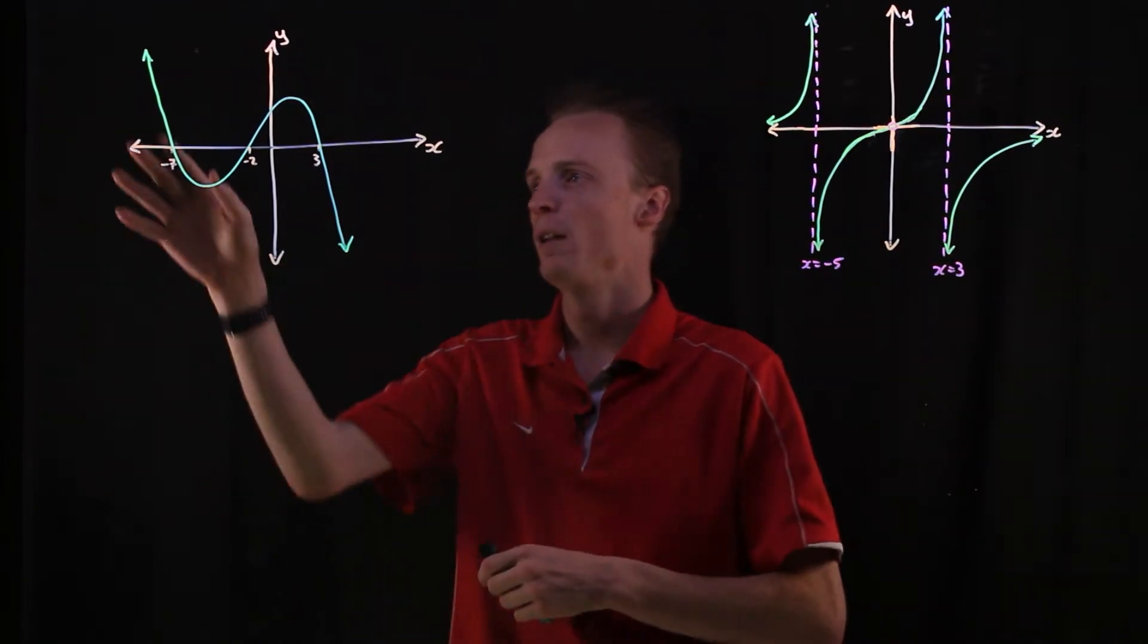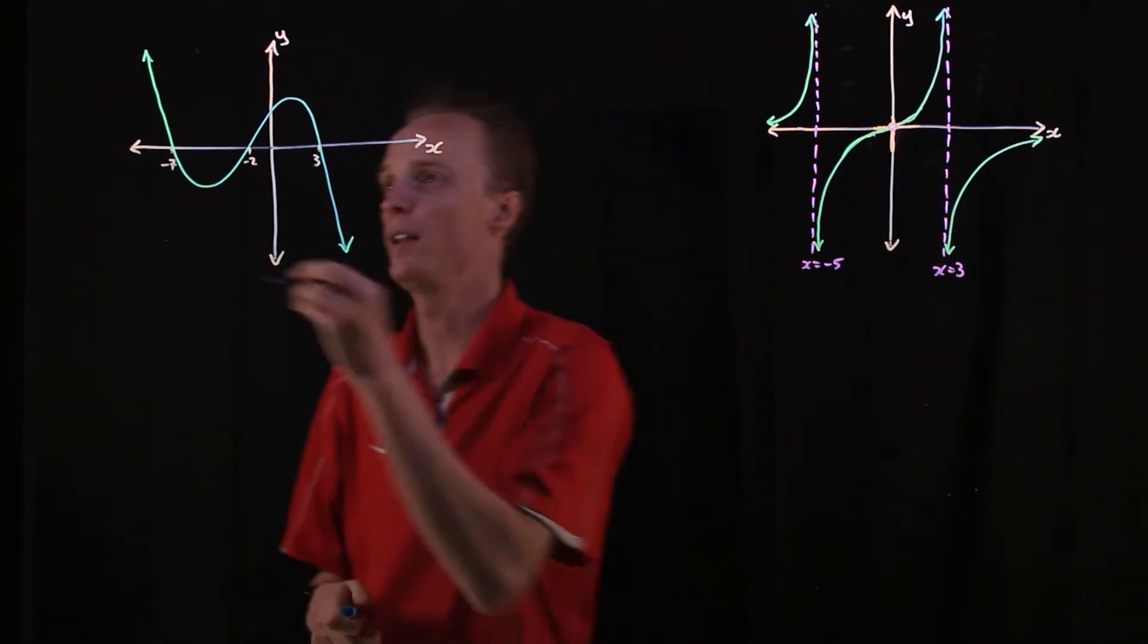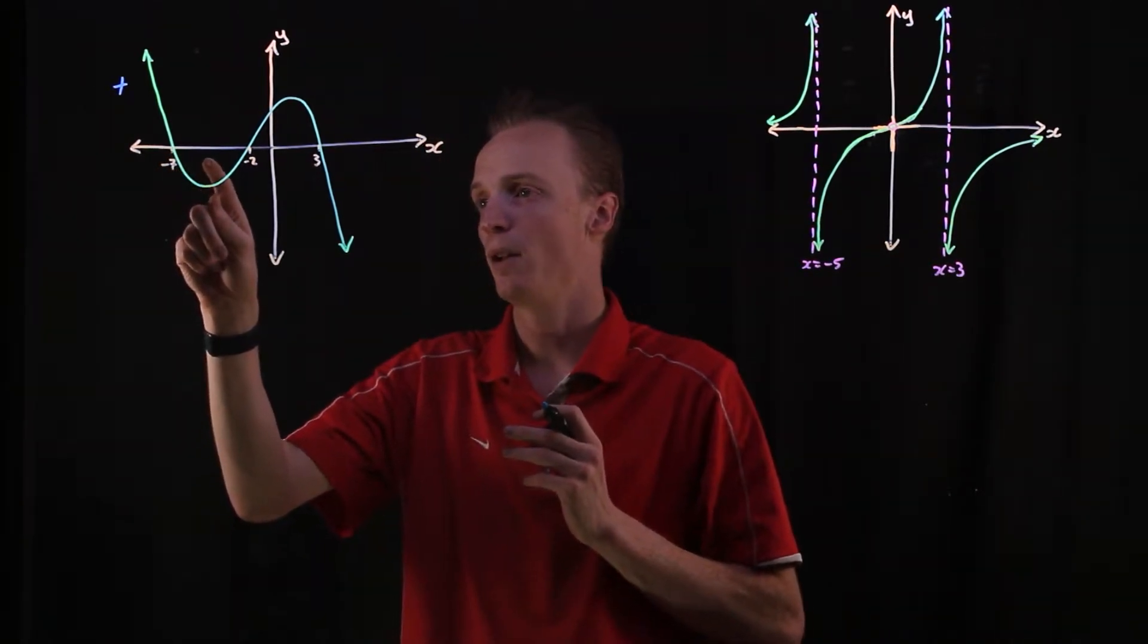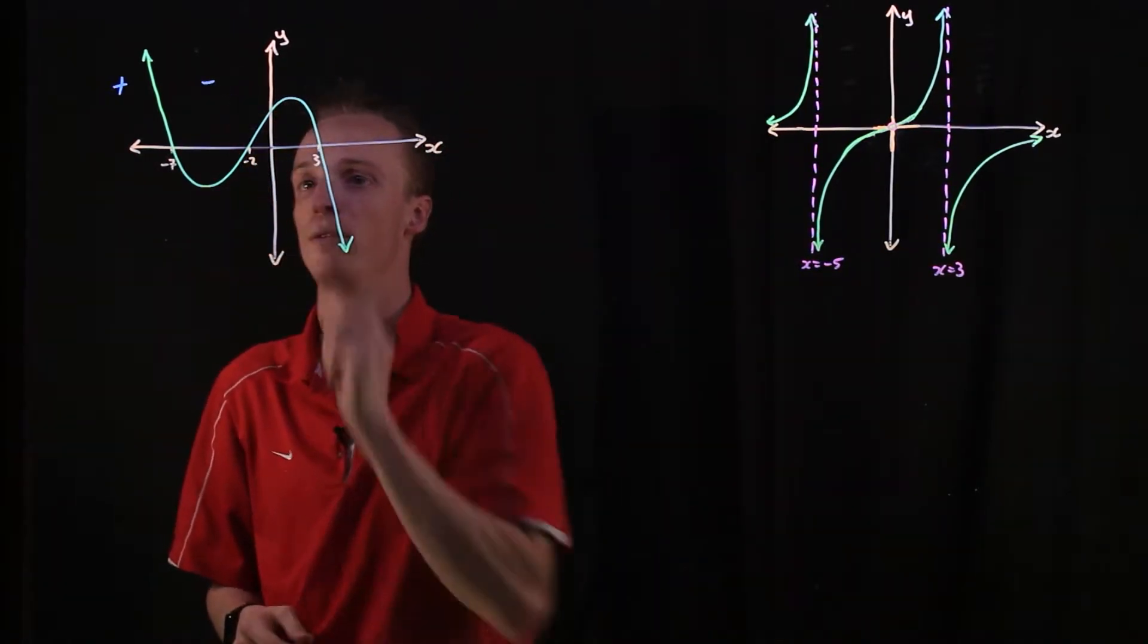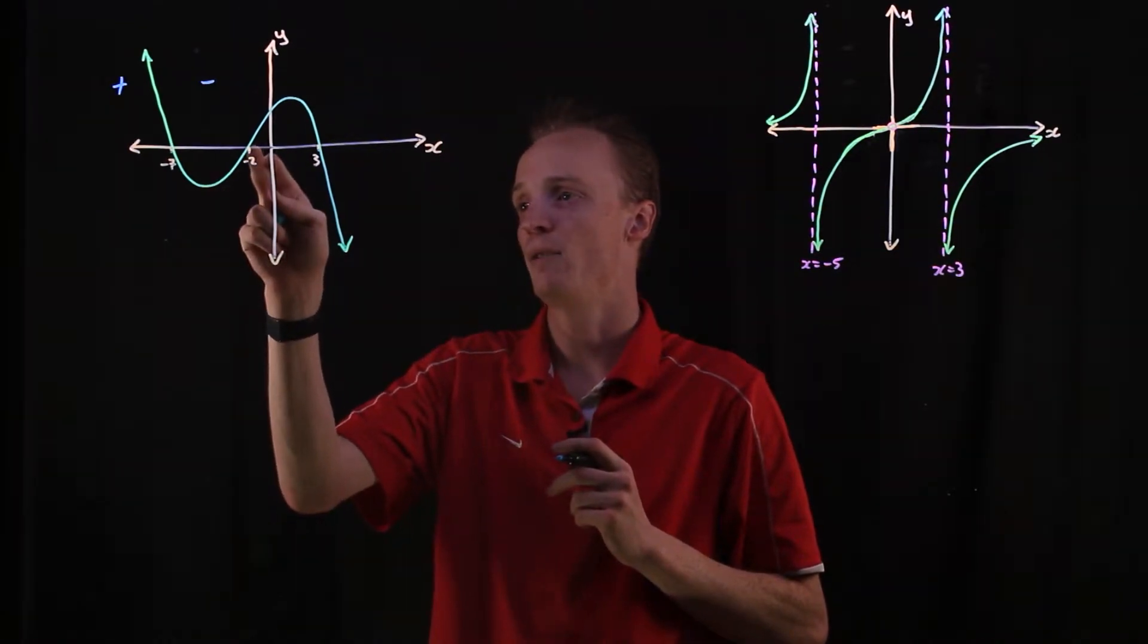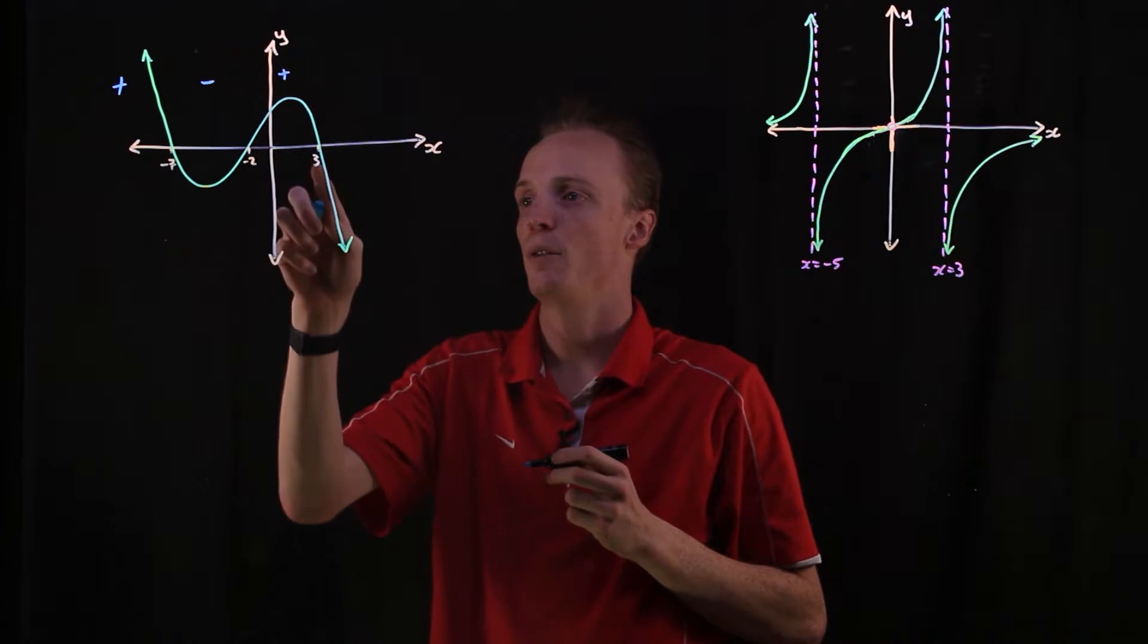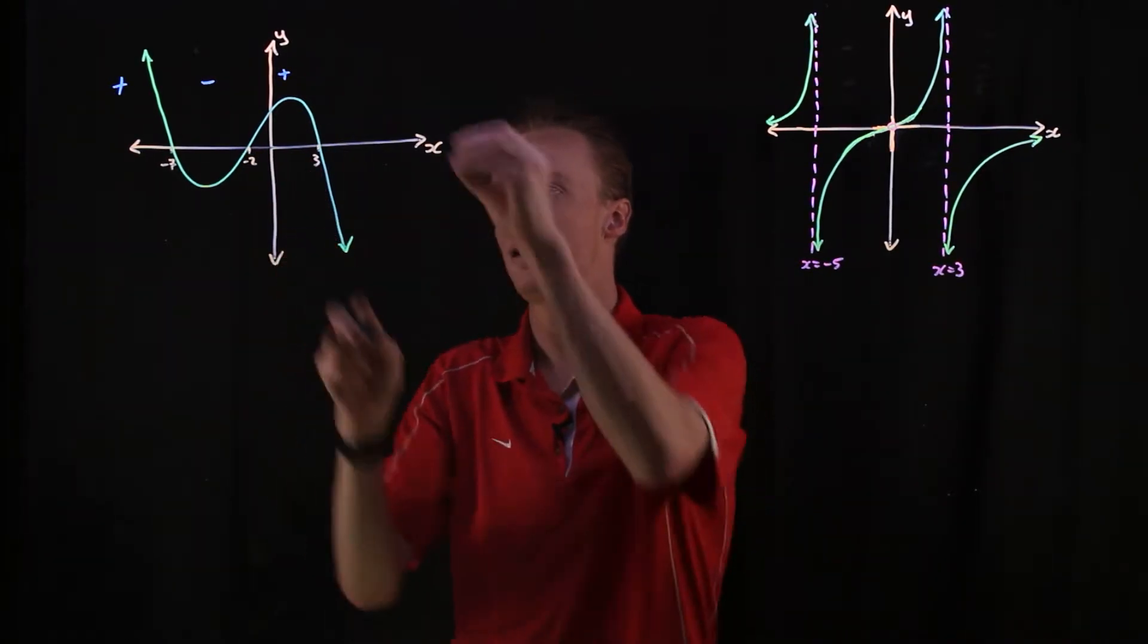For example, in this one here we can see that our y value starts in the positive over here, but it cuts through the x-axis at negative 7 and then dips below into negative values for our y, so then it becomes negative. Then in between here it changes from being negative at negative 2 of the x-intercept and becomes a positive value again. Then it cuts through one last time at positive 3 in the x-intercept and becomes negative.